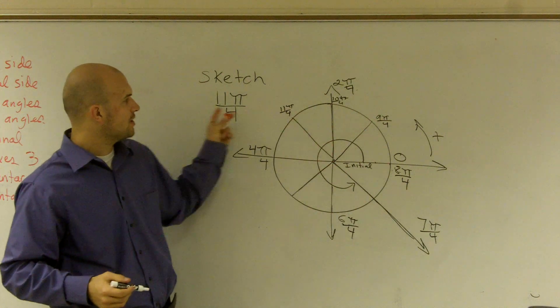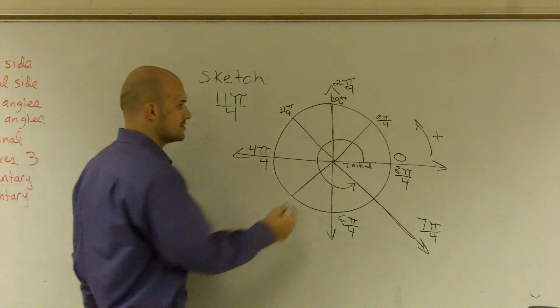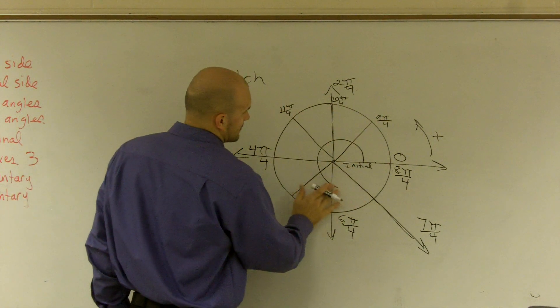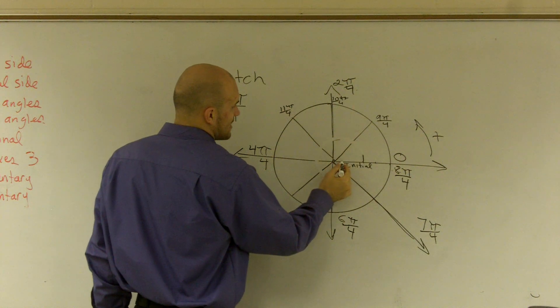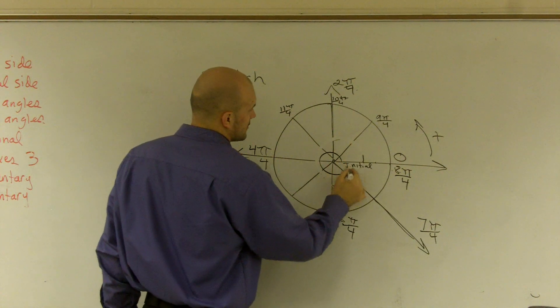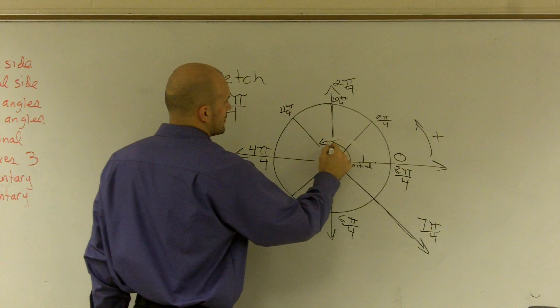So if you notice it, you just keep on going. You can keep on going around the circle. So eventually, my 11π over 4 is going to be right there.